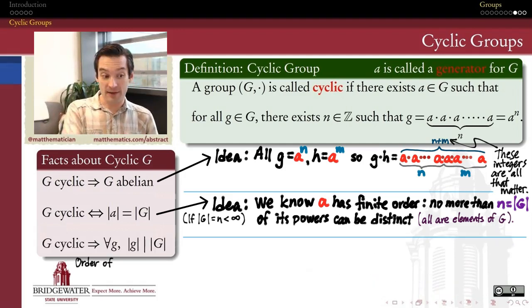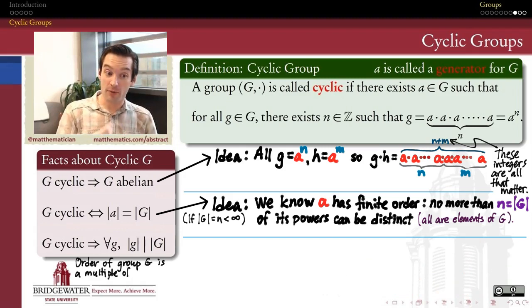Now for the third fact, and this is where we really get off to the races thinking about the orders of other elements in a cyclic group. This fact says that if G is a cyclic group, then the order of any element in that group has to be a divisor of the order of the group. Another way to say that is the order of the group G is a multiple of the order of any of its elements.